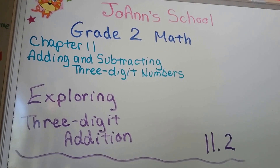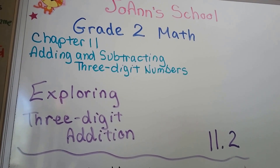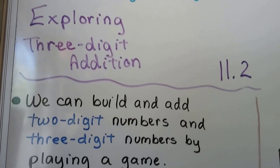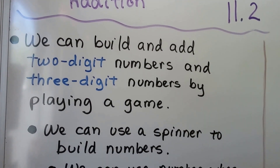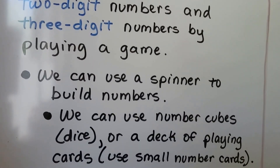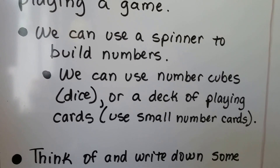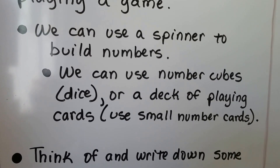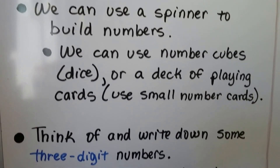We're going to be exploring three-digit addition. This is 11.2. We can build and add two-digit numbers and three-digit numbers by playing a game. We can use a spinner to build numbers, and we could use number cubes, dice, or even a deck of playing cards. Just use the small number cards if you do.